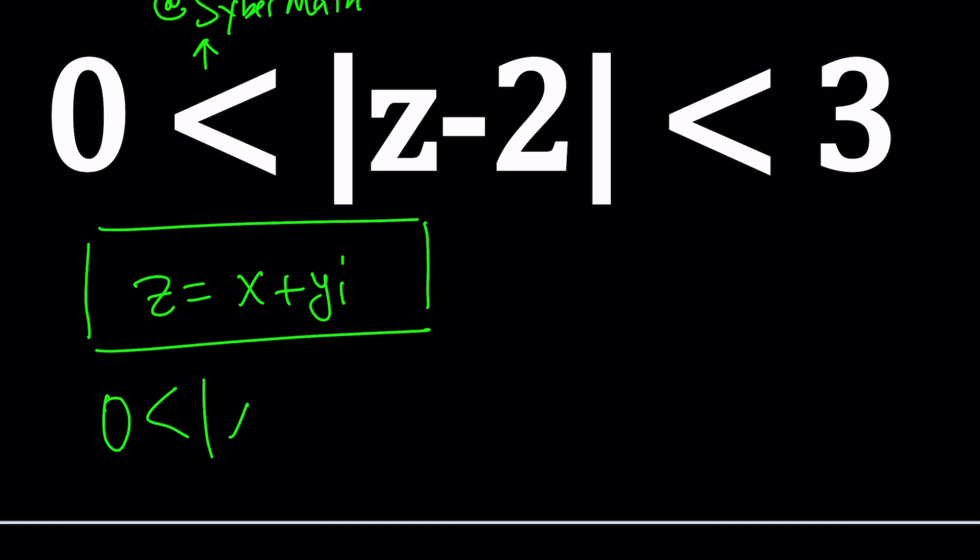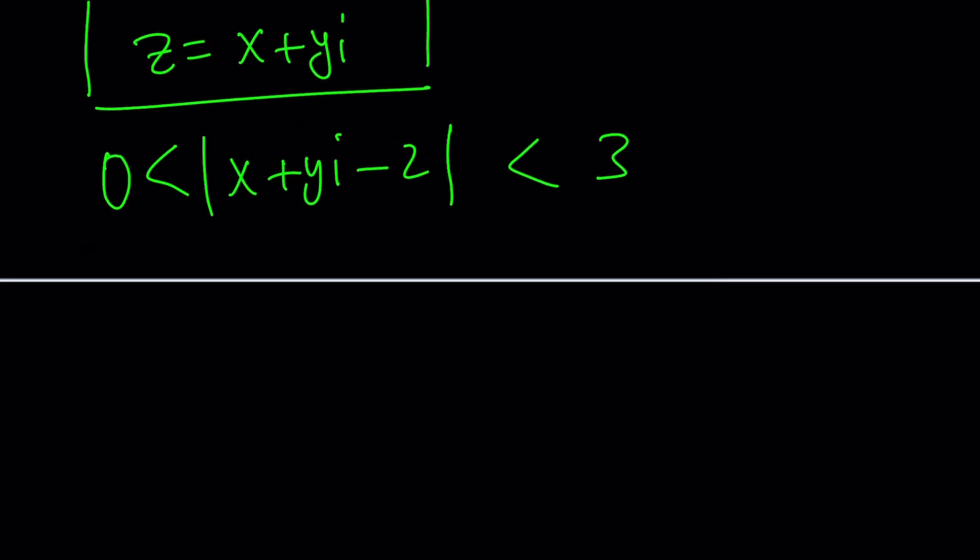So we're going to get x plus yi minus 2, we're going to take the absolute value and then squeeze it between 0 and 3. To be able to do that, we need to consider the definition. What is the absolute value of a complex number?